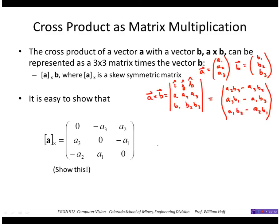So let's see if that's what we get if we multiply this matrix here times B. So I would get 0 minus A3, A2, A3, 0, minus A1, minus A2, A1, 0, times B1, B2, B3.